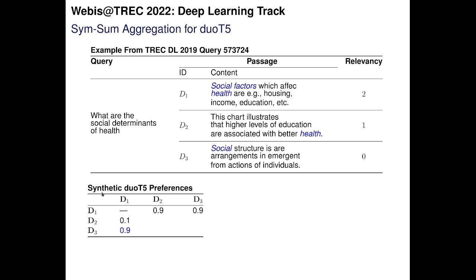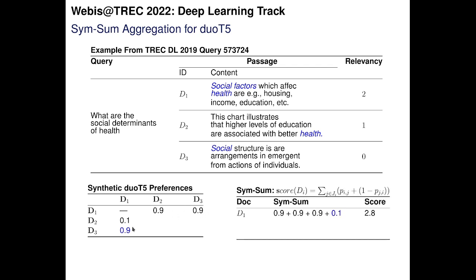Duo T5 also makes the reverse predictions — so document D2 is more relevant with 10% probability. But it can also make inconsistent or contradictory predictions. For example, it might say that document D3 is more relevant than document D1 with 90%. This contradicts the earlier prediction. The default approach for Duo T5 is to aggregate those scores with the symmetric sum, which simply sums the rows and columns of the preference matrix.